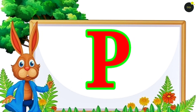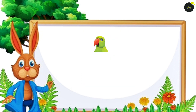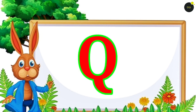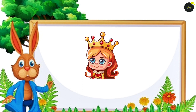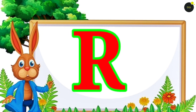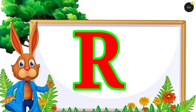P for Parrot. Parrot means Tota. Q for Queen. Queen means Rani. R for Rabbit.